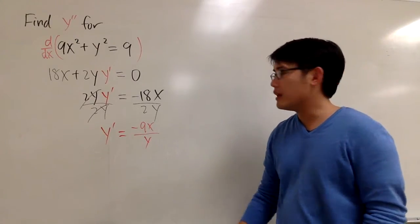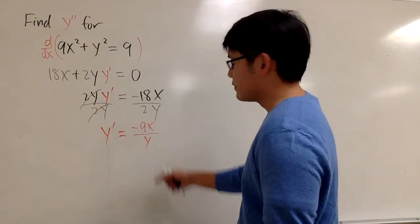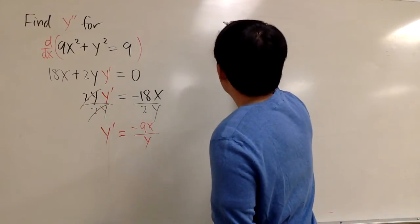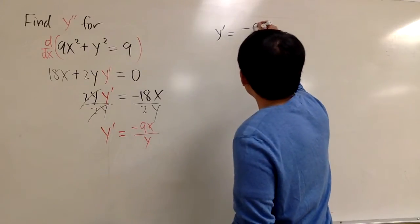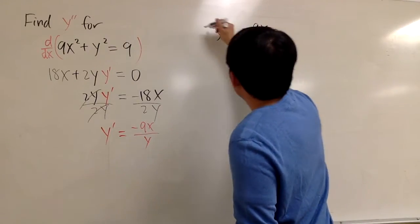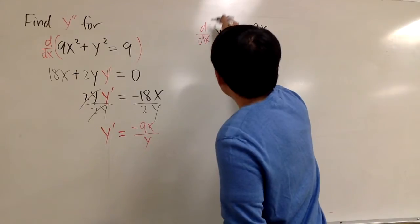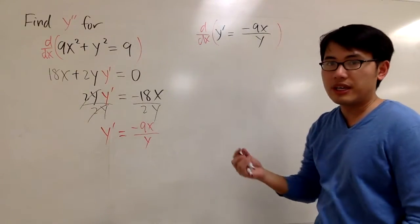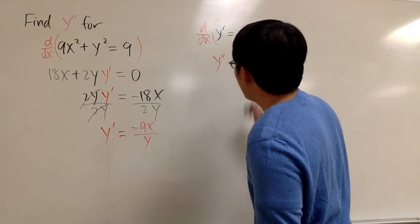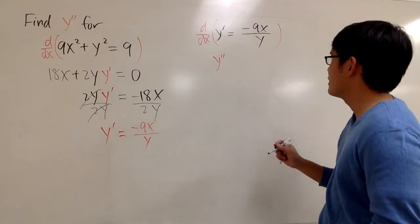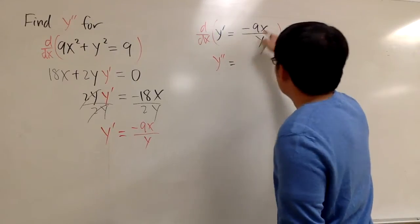And then to get a second derivative, we will have to look at the first derivative and then take the derivative again. So let me write down right here. Y'' we notice is negative 9x over y. And I will put d/dx again to represent we are going to get the second derivative. So this right here, it's exactly the y' that we are going to take. This will be here.